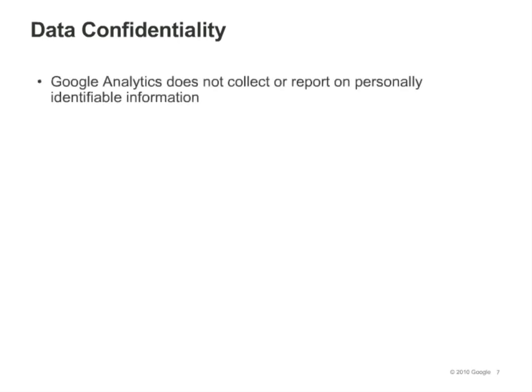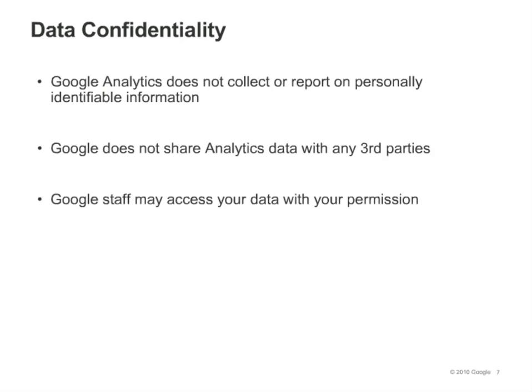All data collected by Google Analytics is anonymous, including where visitors come from, how visitors navigate through the site, and other actions they may perform. No personally identifiable information is collected. Google does not share analytics data with any third parties. Furthermore, Google optimization, support, and sales staff may only access a client's data with the client's permission.